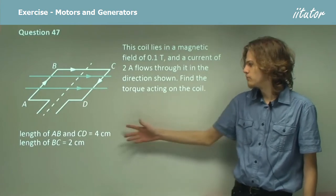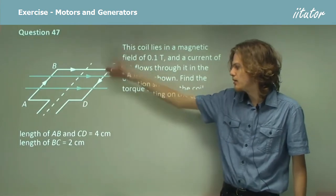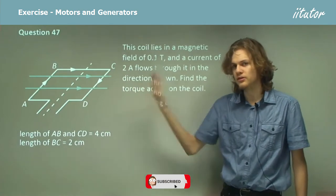Now we have here the measurements of the coil, 4cm from C to D and A to B and 2cm from B to C.